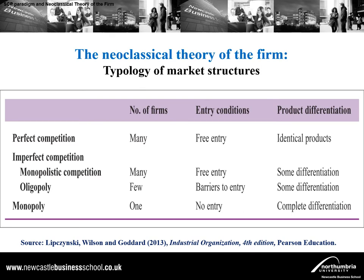Before we proceed, let's talk about the topology of market structures within the context of the neoclassical theory of the firm — what are the types of market structures and what are their characteristics. We start with perfect competition on one end. Under perfect competition, we assume there are many firms, there are no barriers to entry — in other words, free entry — and identical products are being produced.